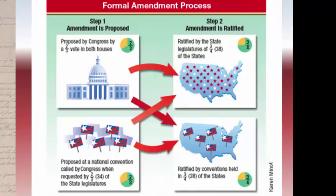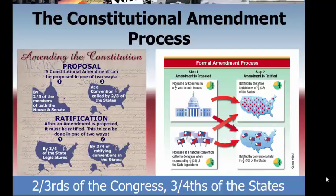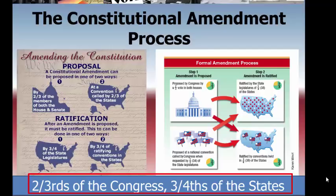The second part of the amendment process is to be sent to the states for ratification, where either state legislatures or state conventions must vote by a three-fourths majority to ratify or approve the amendment. So to keep it simple: two-thirds of the Congress, three-fourths of the states — that's how you make an amendment.